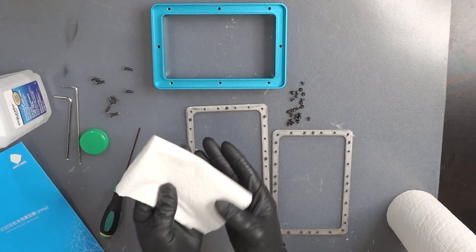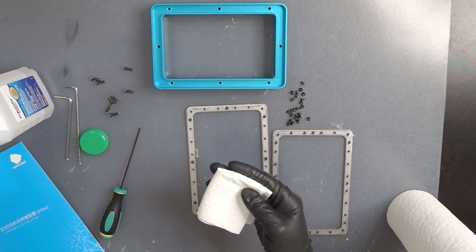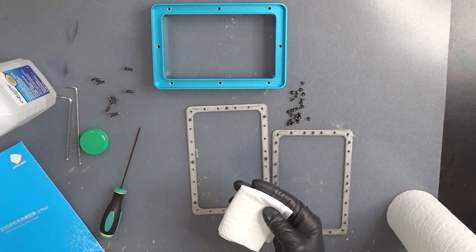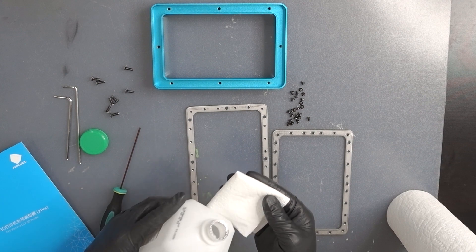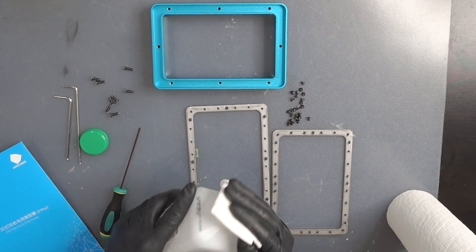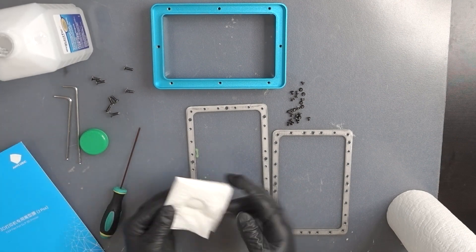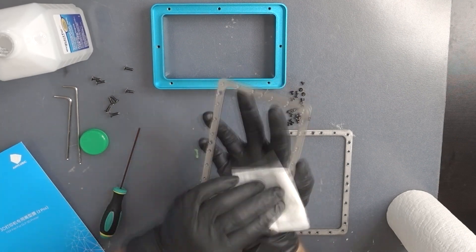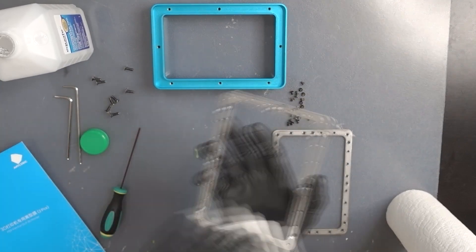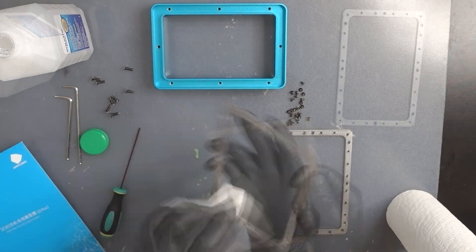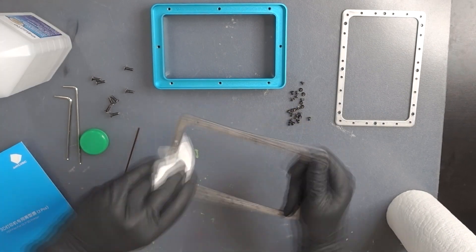We're going to take some of our 70% isopropyl alcohol here and just give everything a nice good wipe down. Get it all nice and clean. Just a good old dab. And then let's just clean this off real good. Get all that resin off of it and just make it nice and spick and span. Nice and clean and ready for the new FEP film. And that's going to be looking fantastic.